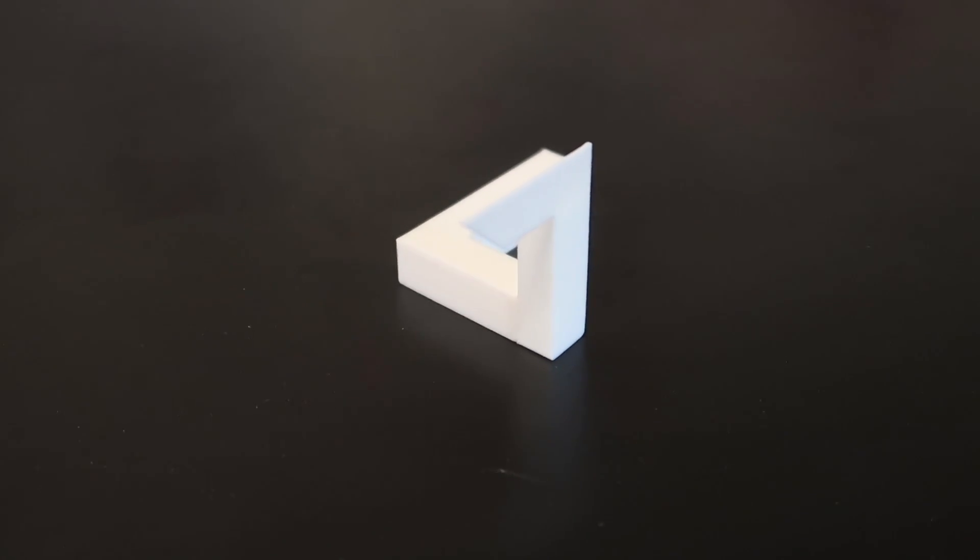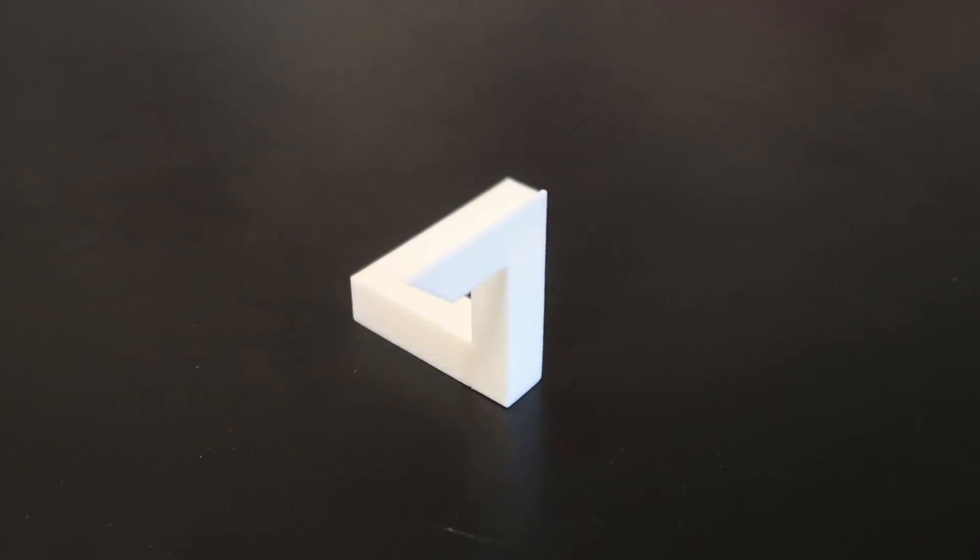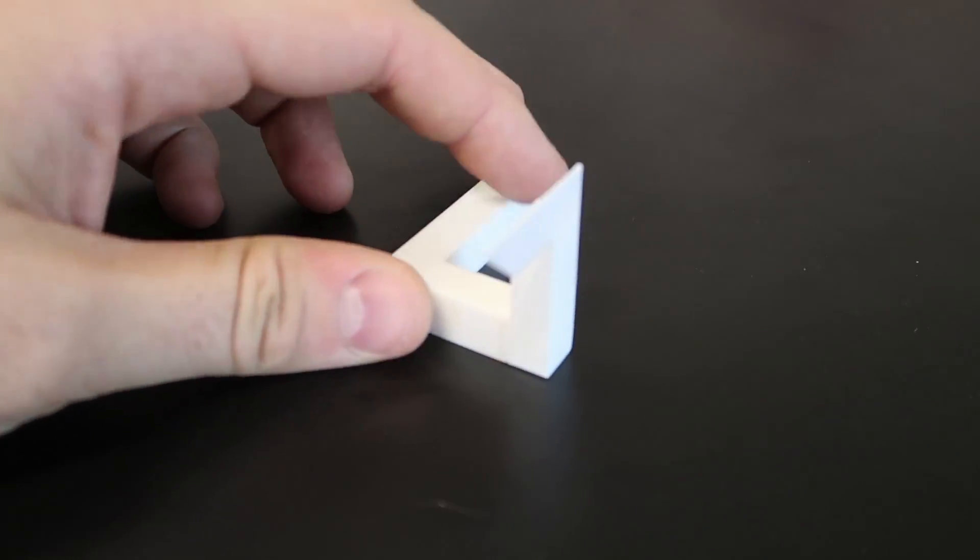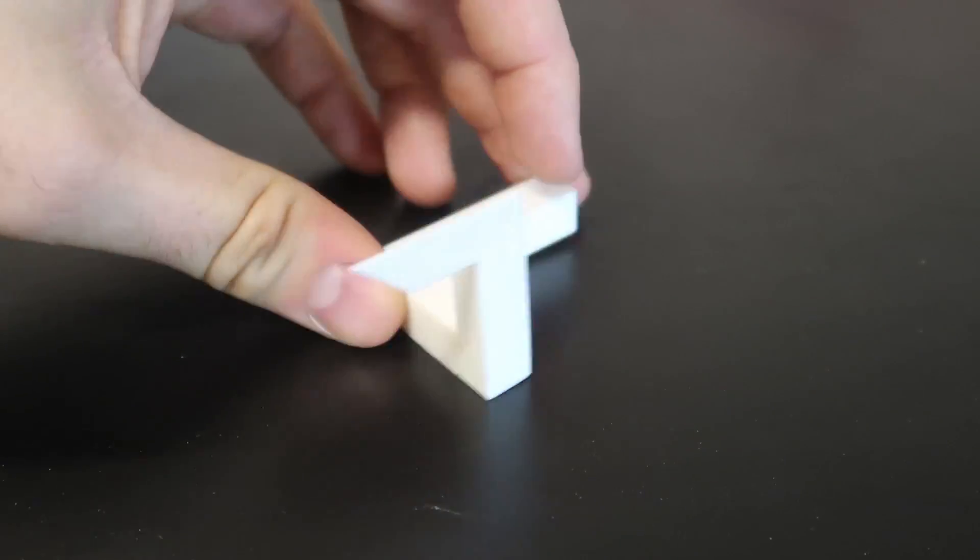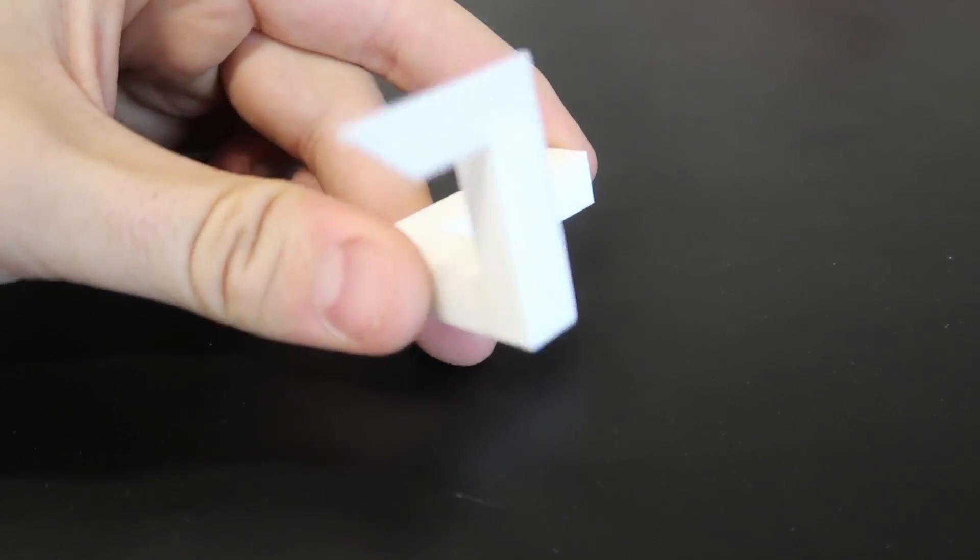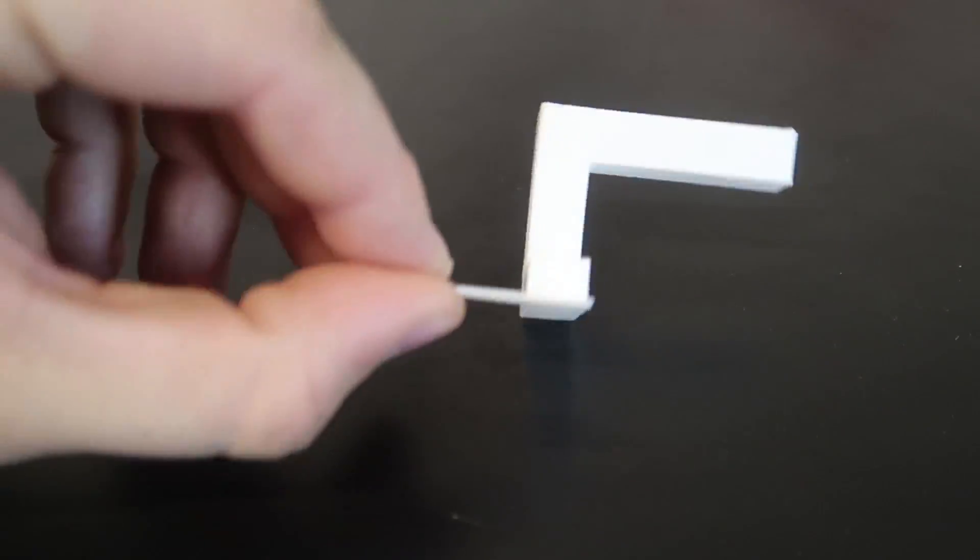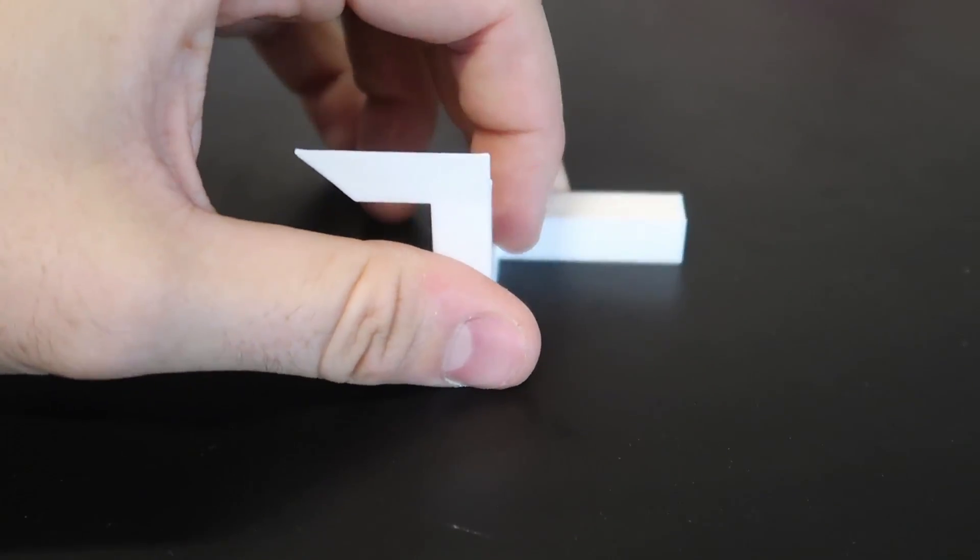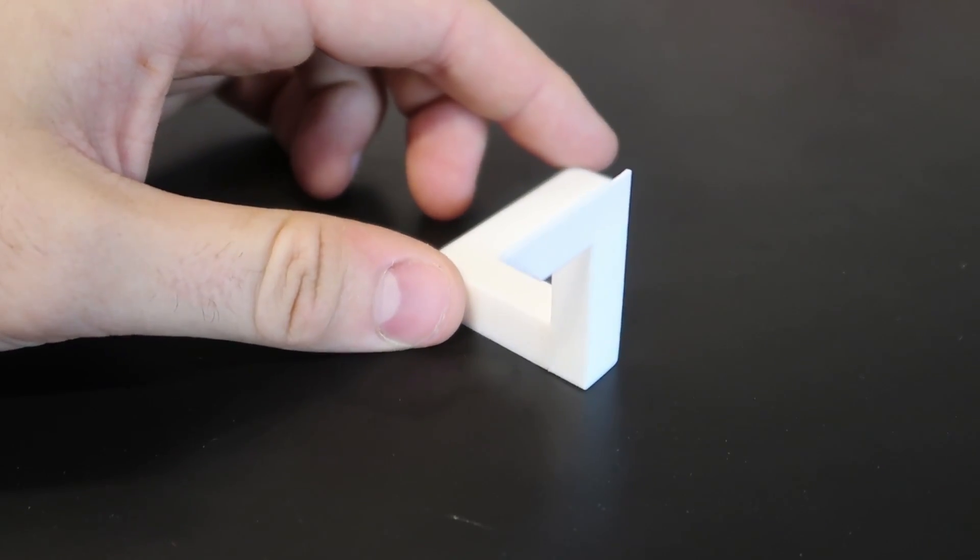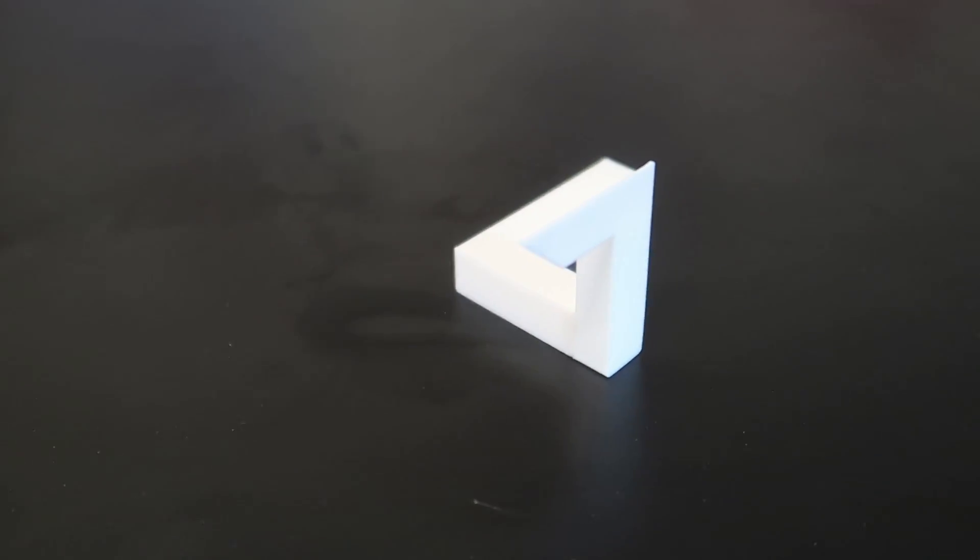Boom. With this one you really got to get a sweet spot, because as you can see you need to line up this part right here with this back. With this illusion you really have to get a sweet spot because this side here you got to line up with this back part, especially on the camera so that way you can see the illusion. Almost there.